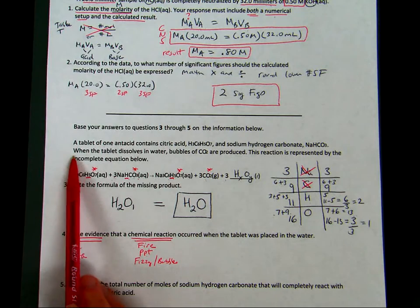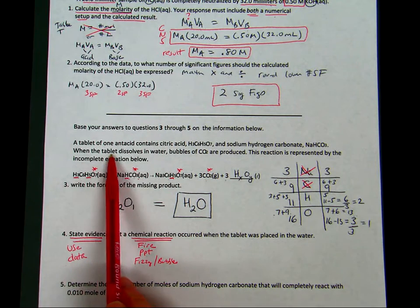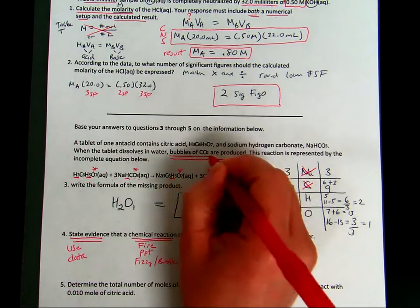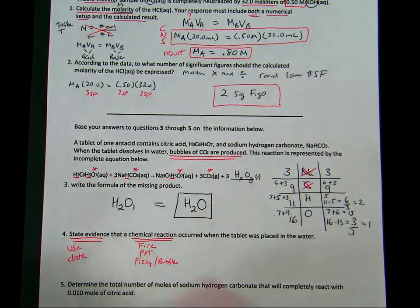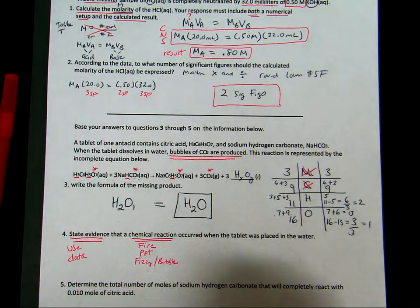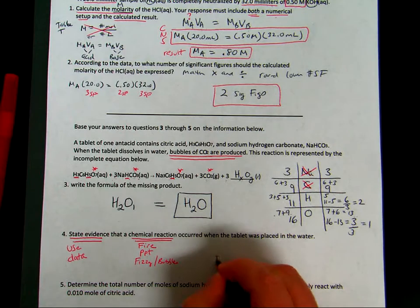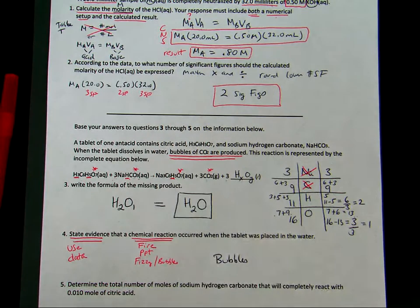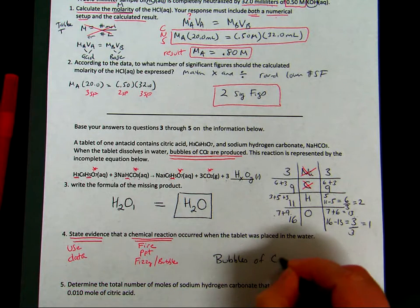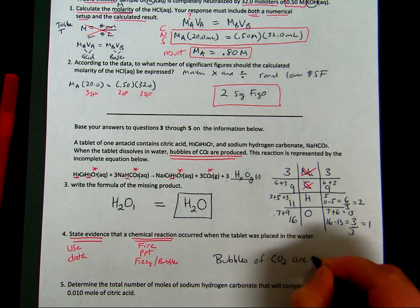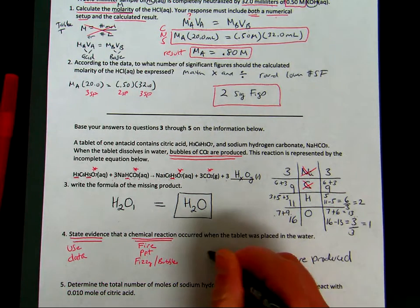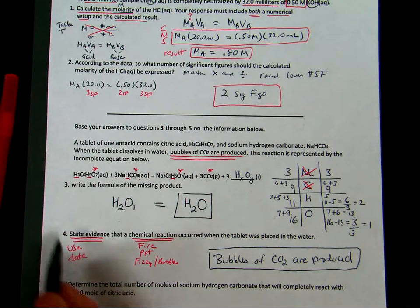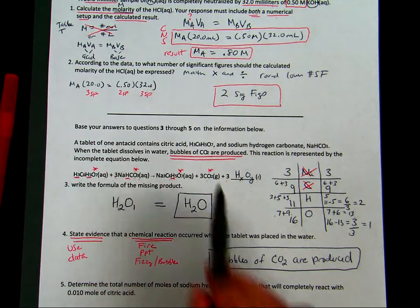So we're looking for ideas of this back in the information. So when we read the second sentence, when a tablet dissolves in water, bubbles of CO2 are produced. There's our evidence. I'm not going to write anything different. I'm just going to simply copy down that part of the information. Bubbles of CO2 are produced. There we go. So if I know what I'm looking for, for data evidence, I found it right there.